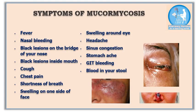Symptoms of mucormycosis. I have taken some images from the internet and the prominent symptoms of mucormycosis are listed on the screen: fever, nasal bleeding, black lesions on the bridge of your nose, black lesions inside the mouth, coughing, shortness of breath, blood, swelling on one side of the face, swelling around the eyes, gastrointestinal bleeding and blood in the stool.